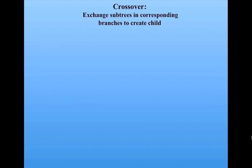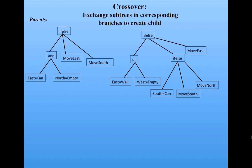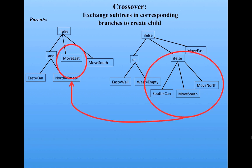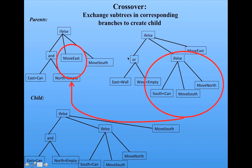To do crossover to produce children, instead of exchanging parts of strings, we exchange subtrees. Here are two possible parent trees. We might create a child by taking a subtree from the second parent and putting it in place of the move-east node in the first parent, creating a child that is exactly the same as the first parent except that the move-east block is replaced by an if-else block. It's still a syntactically correct tree, still a strategy, and this is how the genetic algorithm recombines parts of fit parents.